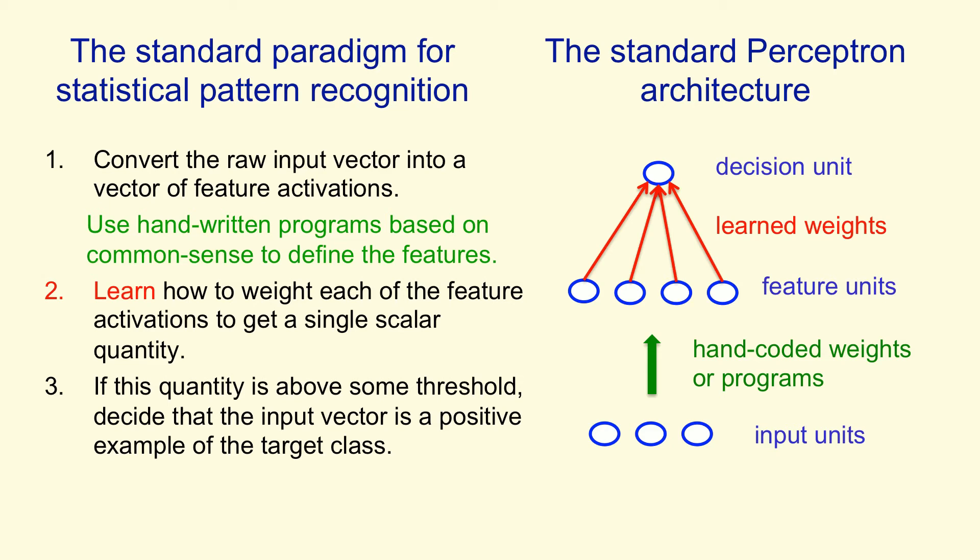Once you've got the activities of the features, you then learn some weights so that you can take the feature activities times the weights and you decide whether or not it's an example of the class you're interested in by seeing whether that sum of feature activities times learned weights is greater than a threshold.